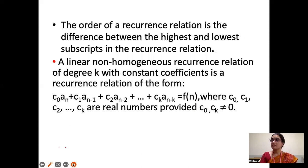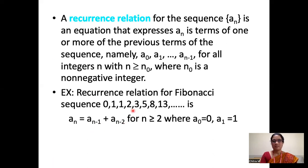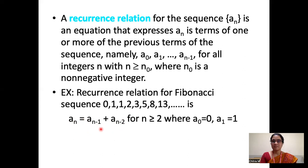What is the order of a recurrence relation? The order is the difference between the highest and lowest subscripts in the recurrence relation. For the Fibonacci recurrence relation, the highest subscript is n and the lowest subscript is n minus 2, giving a difference of 2. So the order of this recurrence relation is 2.